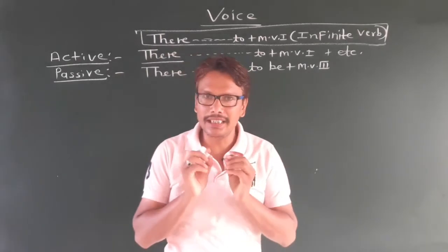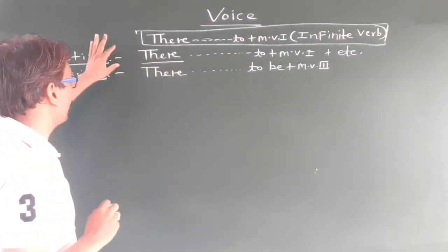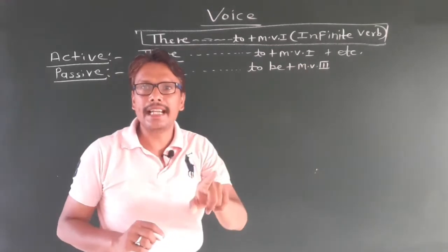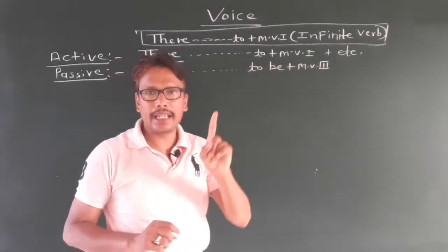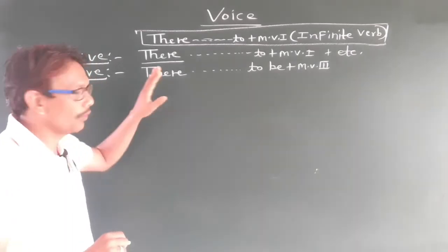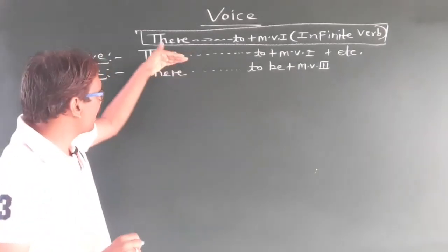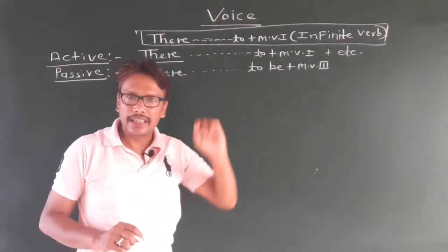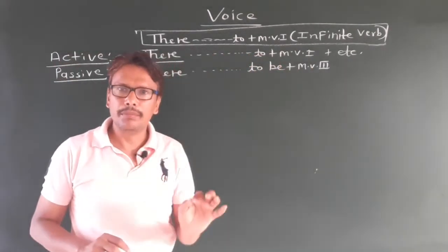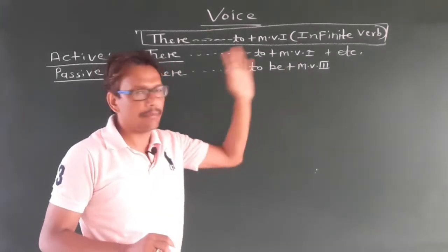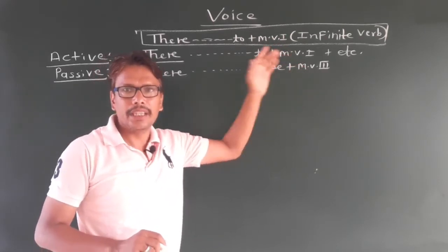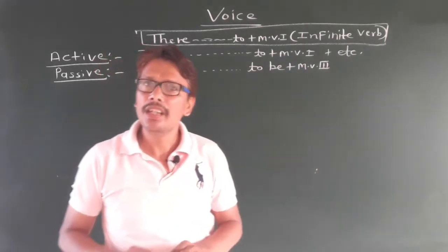प्रिय विद्यार्थियो, थोड़ा सा हिंदी में बात कर लेता हूँ। ये वाक्य active voice में 'there' से प्रारम्भ होते हैं और वाक्य में कहीं भी आपको infinite verb दी हुई आएगी, यानि कि 'to + क्रिया की first form'। यदि आप इसे passive voice में बदलना चाहते हो, तो जैसा का जैसा ही लिख दोगे, लेकिन जिस स्थान पर 'to + V1' दी हुई है, वहाँ passive voice में 'to be + V3' लिखते हैं।